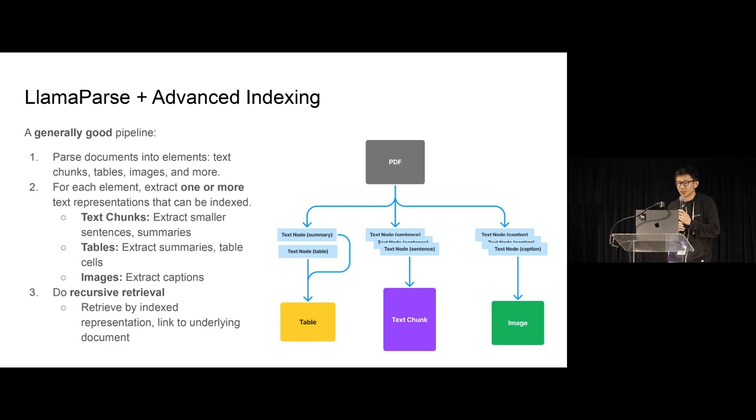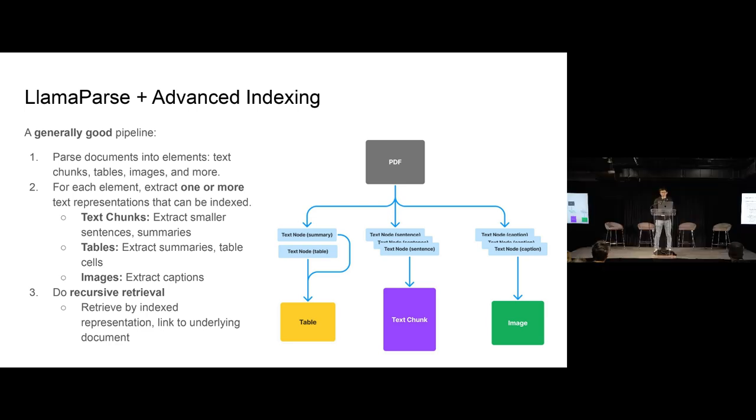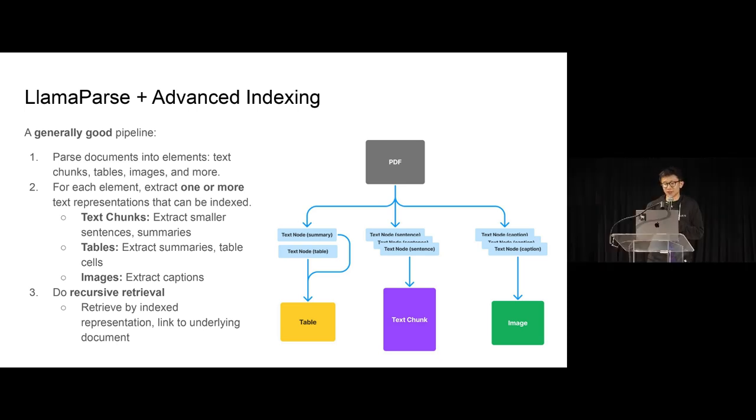You parse the documents into a set of multimodal elements, so text chunks, tables, images, and more. And then for each one of these elements, you extract one or more text representations that can be indexed. And so for a table or an image, you can extract out a summary or, for instance, multiple summaries, multiple descriptions of this element. And what you want to do is you embed and index the summaries, the text representations that link to the underlying object.